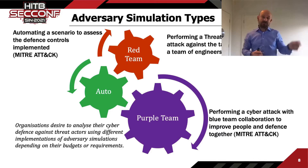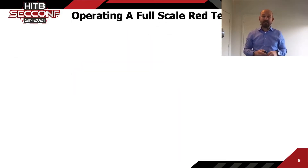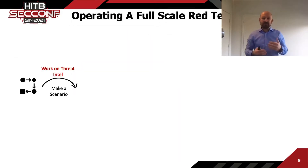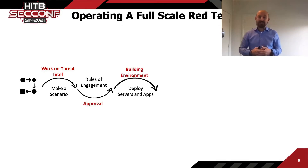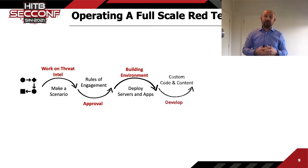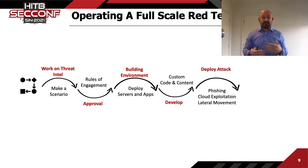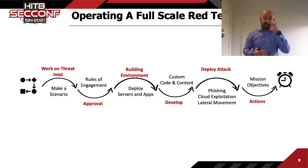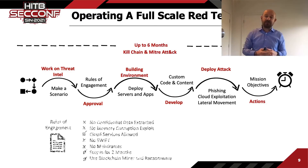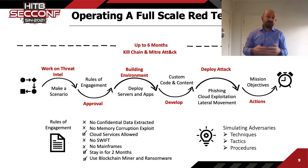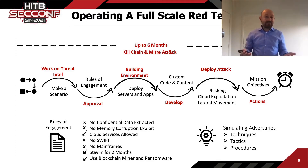Running a red team exercise takes time — sometimes months, up to six months or even a year, like Nobelium. It depends on the exercise objectives. However, it's not easy to rerun for blue teamers, and we can't easily learn from everything. We need to break this down and make it digestible and repeatable.